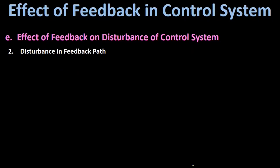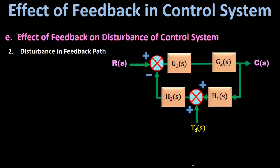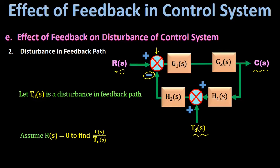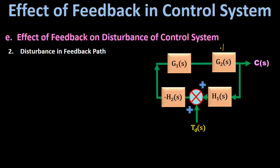Next, we study the effect of feedback on disturbance in the feedback path. In this block diagram, due to non-linear behavior of feedback path elements, a disturbance T(s) is produced in the feedback path. To find its effect on output C(s), we assume R(s) = 0, which eliminates the summing point and adds the negative sign to gain H2(s). The gains G2(s), G1(s), and minus H2(s) are then in series.